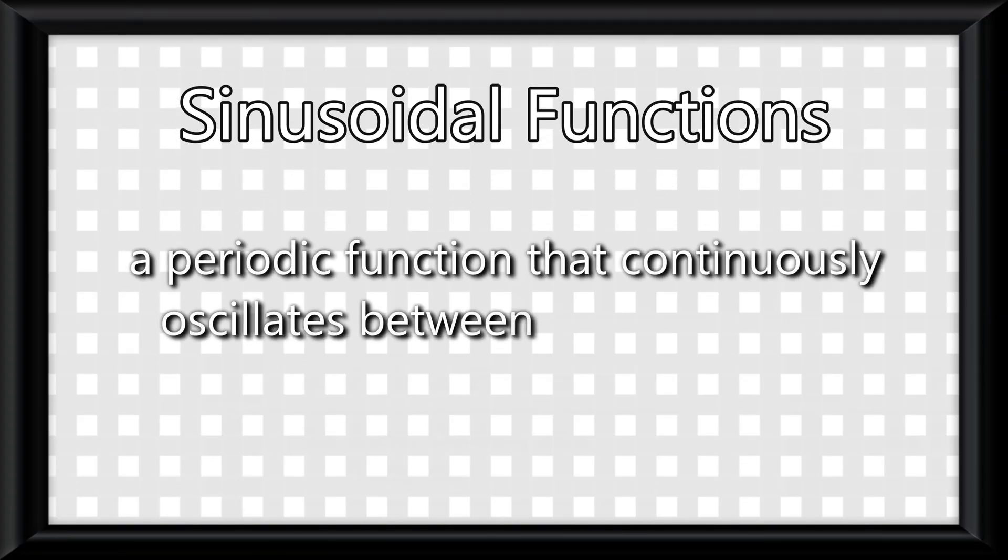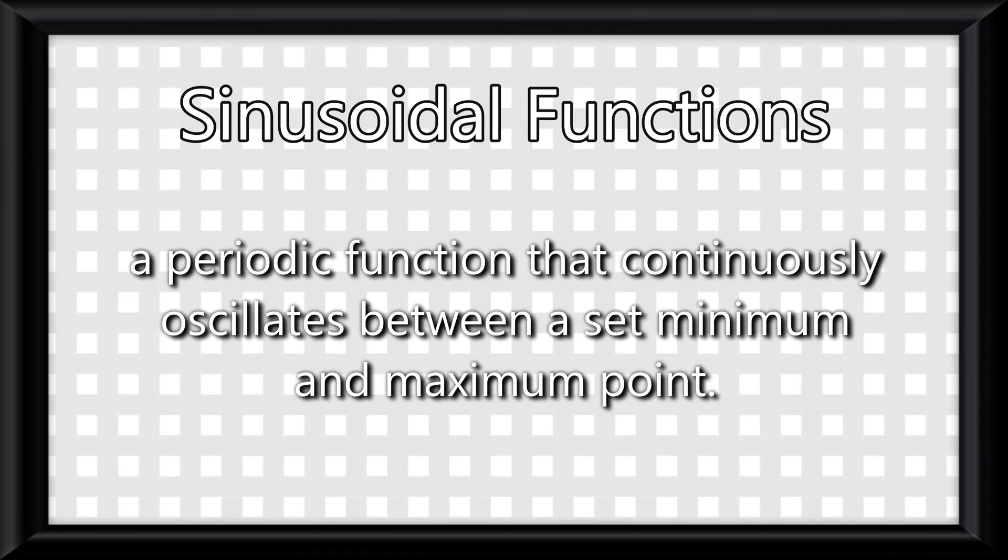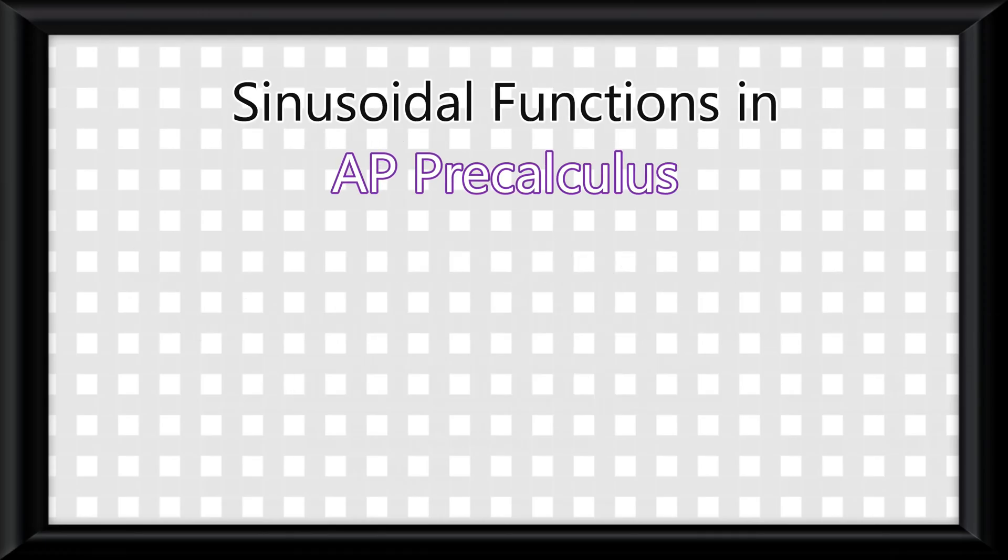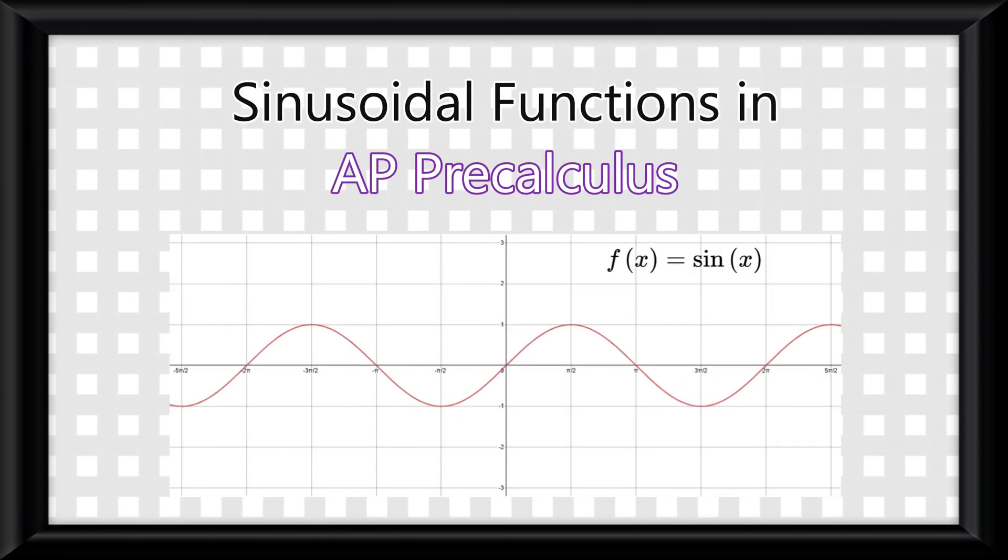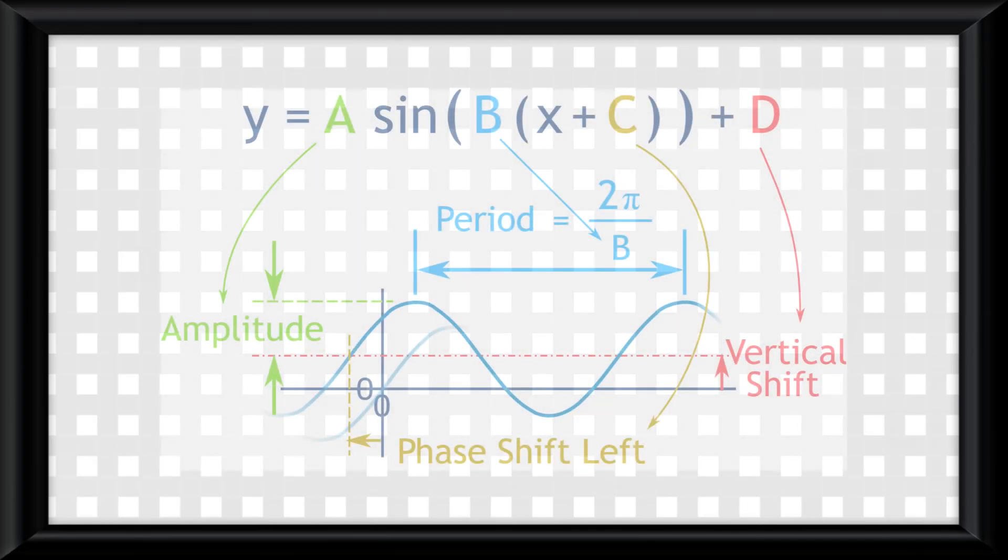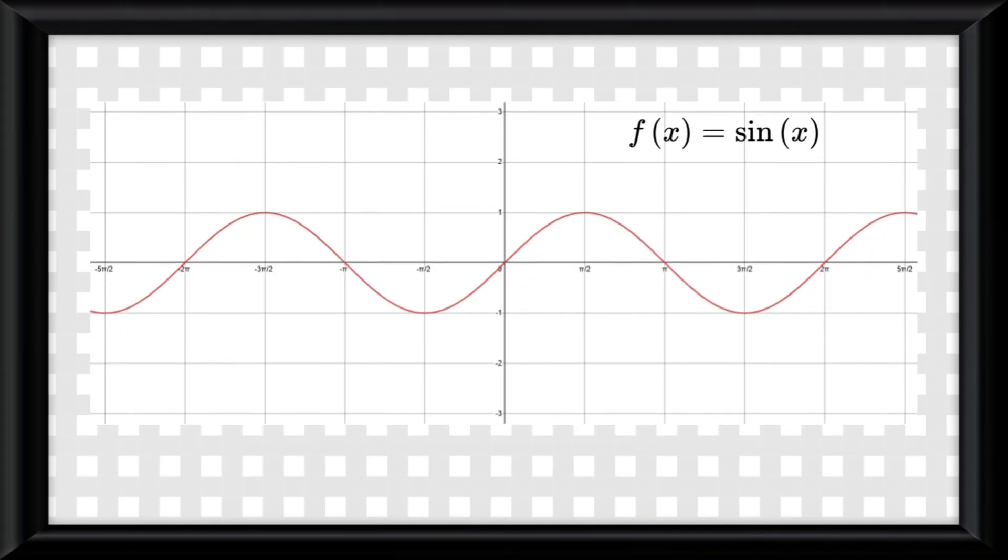A sinusoidal function by definition is a periodic function that continuously oscillates between a set minimum and maximum point. The sinusoidal functions in this course will just be the basic cosine and sine functions. The actual details of the equation will be covered next video, so let's talk about the specificities for the graph now.